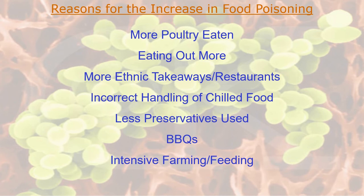There are more ethnic takeaways and restaurants in the UK than there were about 30 years ago. With ethnic takeaways the problem is the language barrier — most employ people whose first language is not English, and it's very difficult to find a food hygiene qualification delivered in their language. They tend to read books in their own language — you can buy food hygiene books in about 50 different languages — but it's not the same as an interactive or online course.